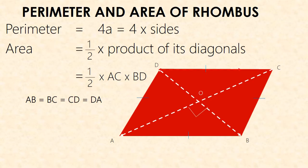Next, formula for the perimeter and area of the rhombus. The perimeter equals 4 times A, that is 4 times the side. The area equals 1/2 times the product of its diagonals. As you can see in the picture, the diagonals are AC and BD. So the area equals 1/2 times AC times BD.